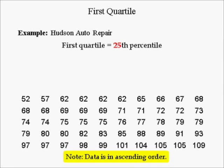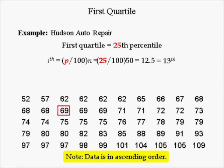The first quartile is the 25th percentile. Using the sorted Hudson Auto Repair data, the first quartile is computed by finding its location i, where i = (25/100) × 50 = 12.5. Since 12.5 is not an integer, we round up to 13. The 25th percentile — the first quartile — is the 13th value in the sorted data, which is 69.